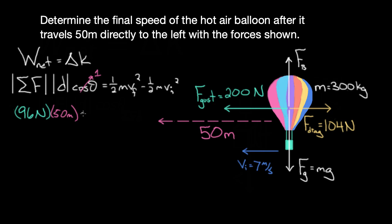So this equals ½ times 300 kilograms times vf²—that's what we want to determine—minus ½ times 300 kilograms times the initial speed, 7 m/s, squared.